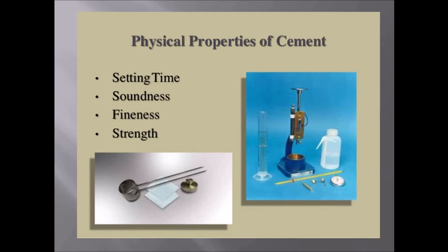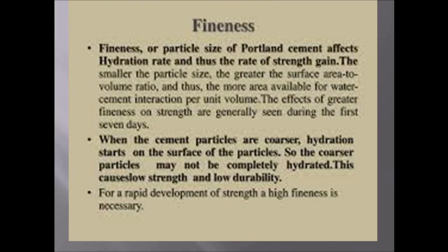Let's come to the physical properties of cement. There are certain tests conducted on cement: fineness test, consistency test, setting time test, soundness test and the strength test. The fineness test is carried out to check the proper grinding of cement. The fineness or particle size affects the hydration rate and thus the rate of strength gain. The smaller the particle size, the greater the surface area to volume ratio and more area is available for water-cement interaction per unit volume. Coarser particles may not completely get hydrated, causing low strength and low durability. For rapid development of strength, high fineness is required.